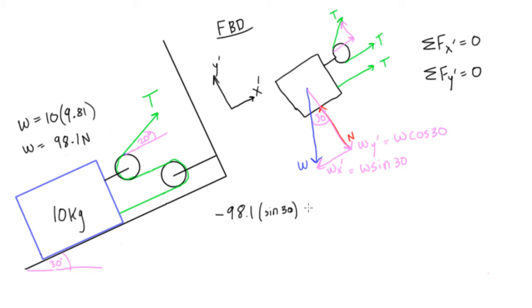And then we're going to have plus two t, that's this tension and this tension pulling right along the x prime axis, plus we're going to have t cos 20, right, and that's this x prime component of this tension. Okay, so this is all going to be equal to zero.